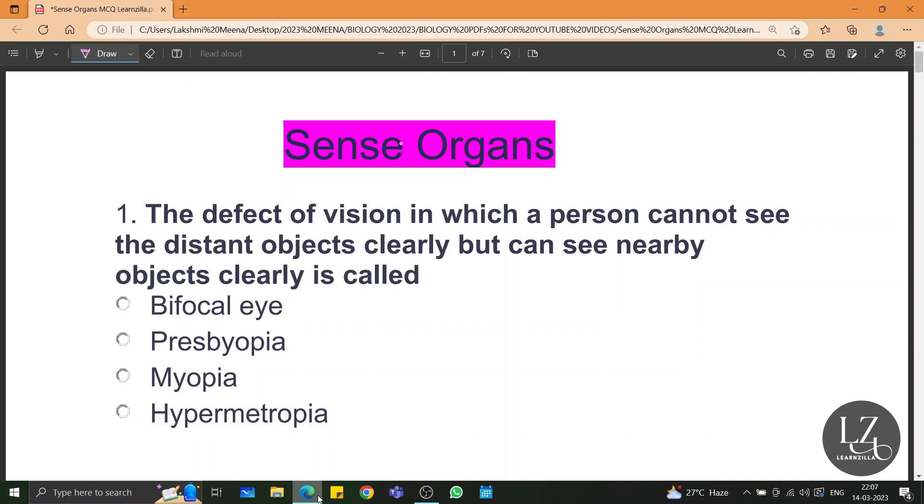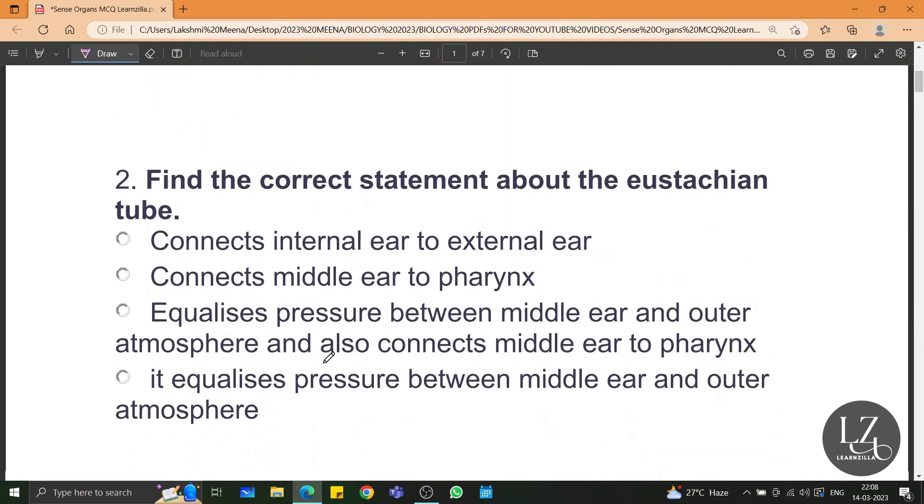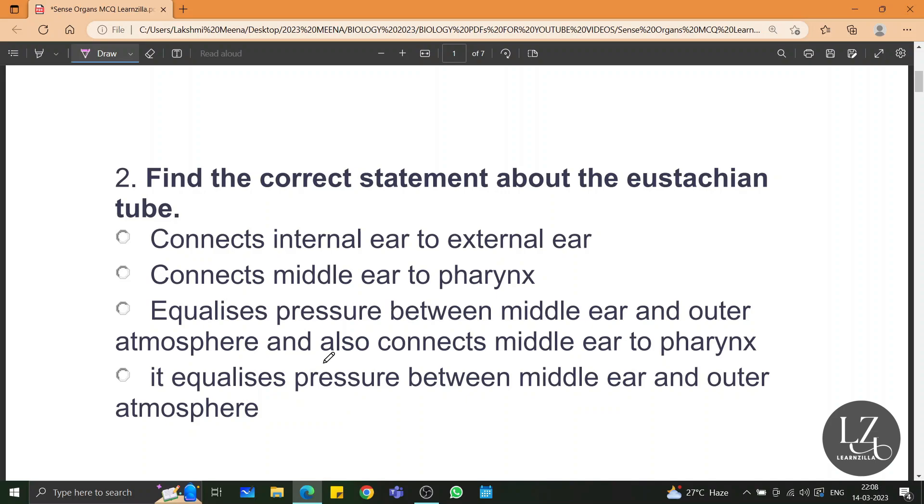The first question is the defect of vision in which a person cannot see the distant objects clearly but can see nearby objects. This is short sightedness, also called myopia. Find the correct statement about the Eustachian tube. The Eustachian tube equalizes the pressure between the middle ear and the outer atmosphere and also connects the middle ear to the pharynx of the throat region. The third option is the right answer.